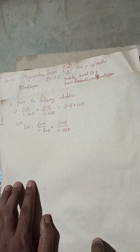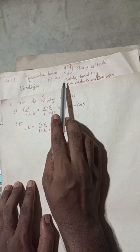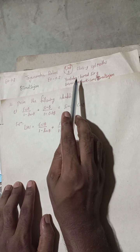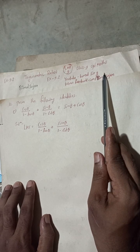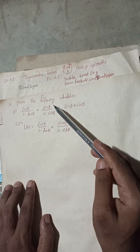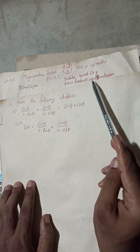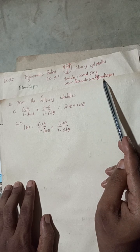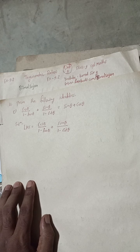Hi everybody, welcome back to Bimal Sarjan's YouTube channel. This is question number 10c, prove the following identities of exercise 9.2, trigonometric ratios, class 9 optional mathematics. You can check the playlist of Bimal Sarjan's YouTube channel — a lot of solutions for class 9 and 10 have been uploaded. You can also follow at facebook.com/bimalsarjan to get notifications of newly uploaded videos.